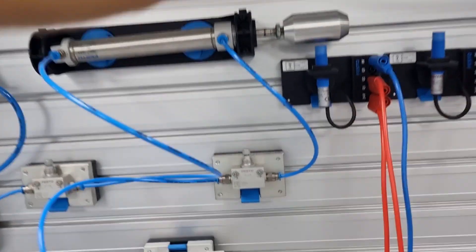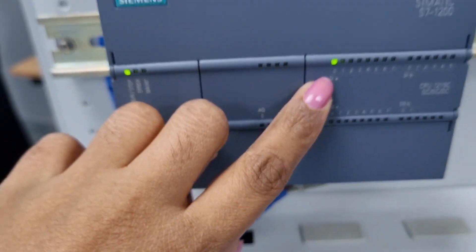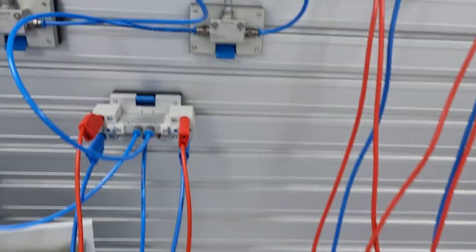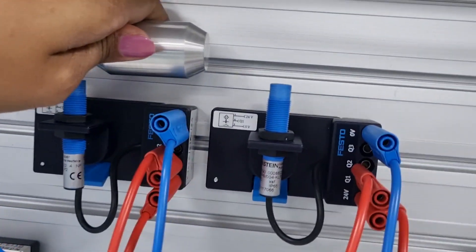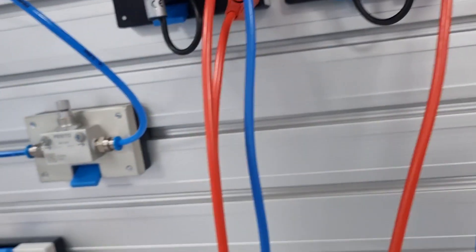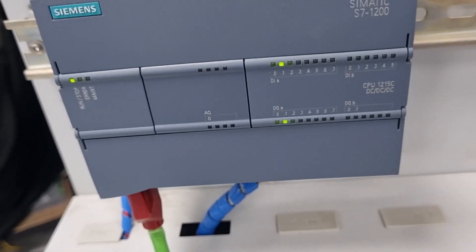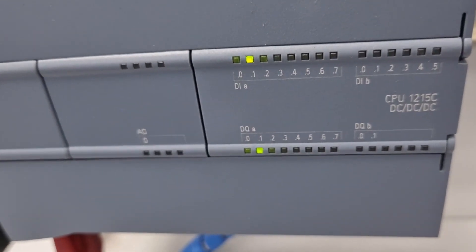Initially, this is in the retracted end position. Now you can see the sensor detects this particular position. You can see I0.0, this LED is on. That means the sensor output is high because it is detecting. If I change this position to the extended end position, this particular sensor will detect and give the output. You can see this is connected to I0.1. That sensor output is also high.